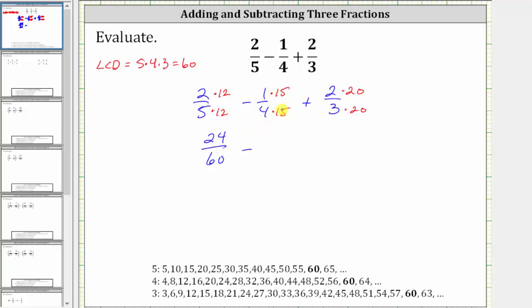One fourth is equivalent to 15 60ths. And two thirds is equivalent to 40 60ths.